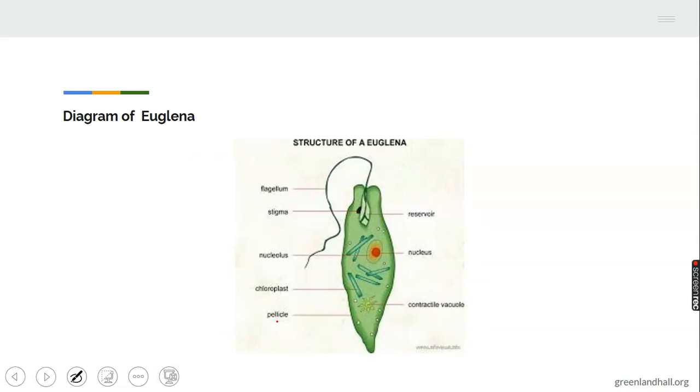There we have the structure of euglena on the slide. You can see the flagellum that is used for sensitivity and movement, the nucleus, the controlling unit, the contractile vacuole, the pellicle for rigidity, the chloroplast which makes it a plant. The presence of chloroplast in euglena makes it a plant and that is why we say it is a dual organism. It can act as an animal. It can act as a plant.